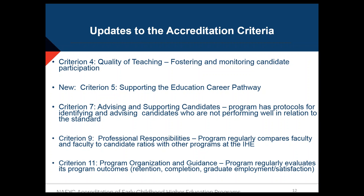The accreditation criteria slide doesn't show dramatic change either. The one new item is a second piece for criterion five — a new criterion related to supporting the education career pathway. As we began accrediting baccalaureate and graduate degree programs, we started thinking about the role of programs at different degree levels in preparing early childhood professionals. This connects to NAEYC's broader 'Power to the Profession' effort, encouraging programs to think about the entire pathway — from candidates' prior experiences through where they'll go after completing the program.